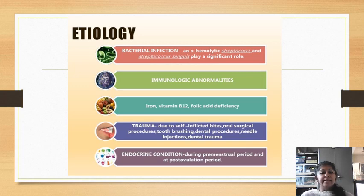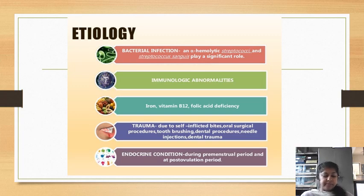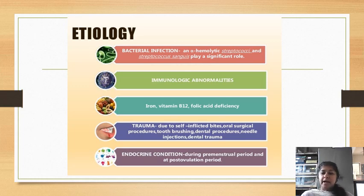Another etiologic agent is immunologic abnormalities — that is, an autoimmune response of the oral epithelium was considered to be an alternate etiologic factor. Another etiologic agent may be iron, vitamin B12, or folic acid deficiency. Trauma is another etiologic factor due to self-inflicted bite or oral surgical procedures, tooth brushing, dental procedures, needle injections, and dental trauma.